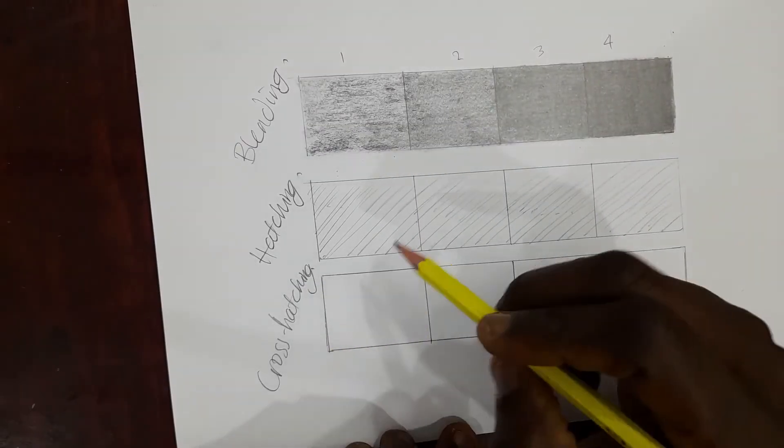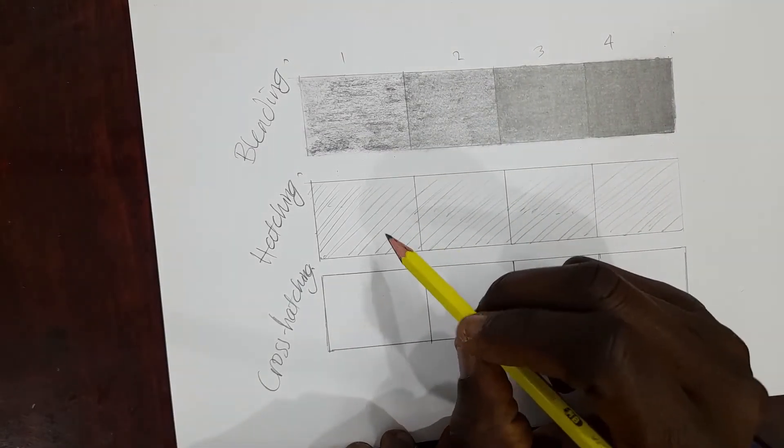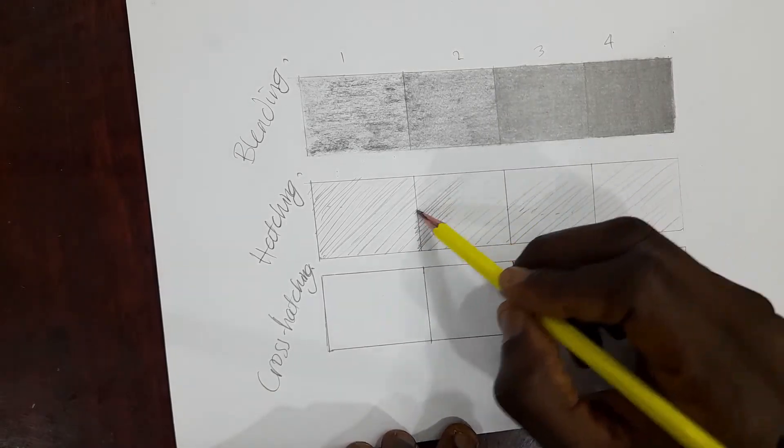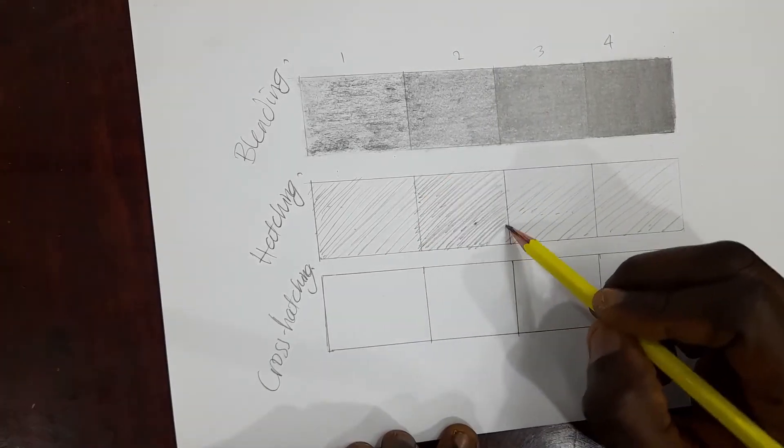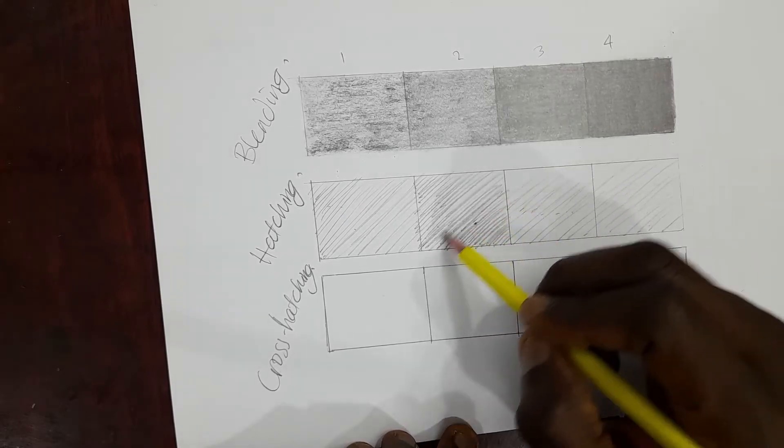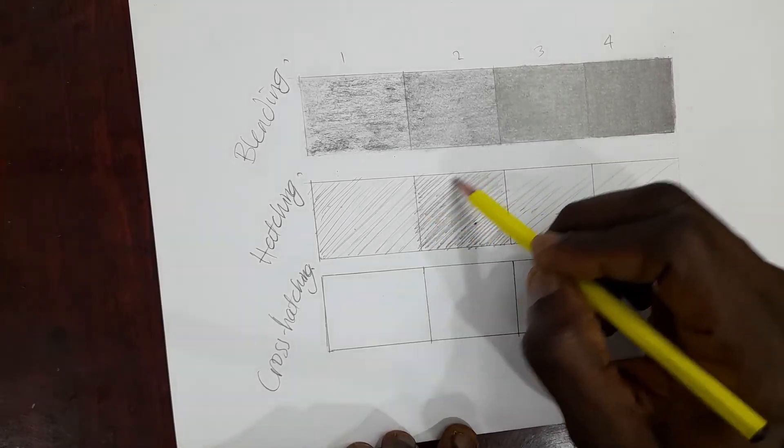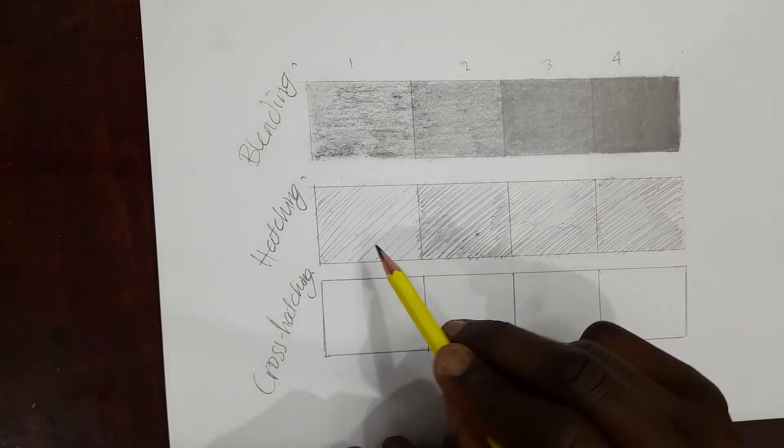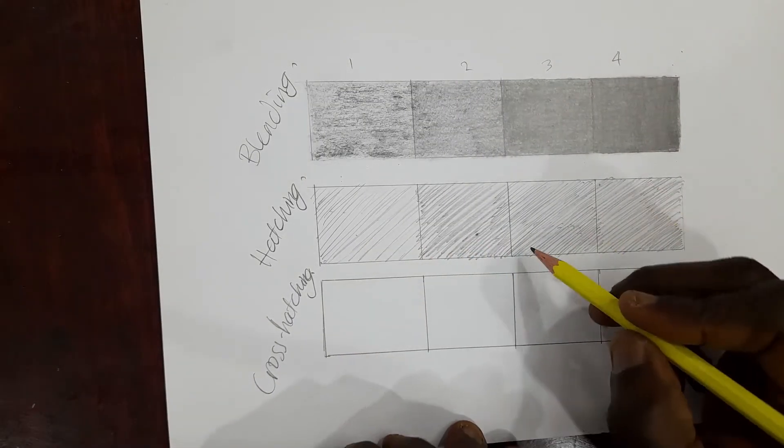When you're doing the hatching technique where you're using the tip of your pencil, if you want a part to be darker, you add more lines just as I am doing now. The other thing you do is you can also apply a little more pressure on your pencil as you make your marks. So this is my lightest tone, this is my light tone.